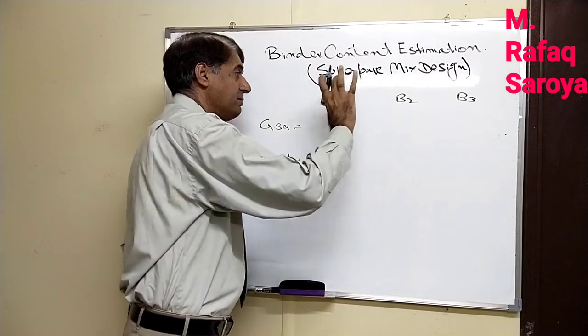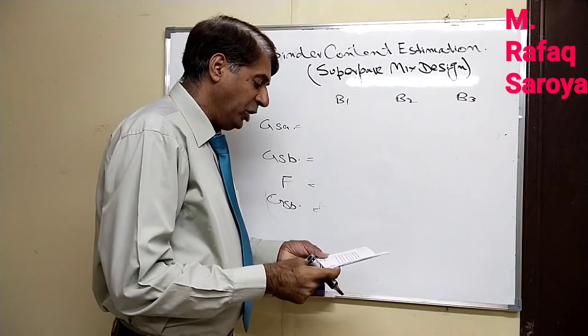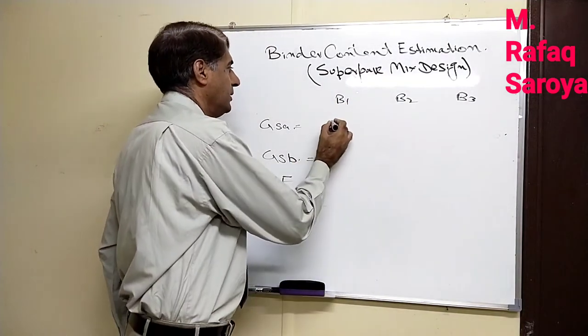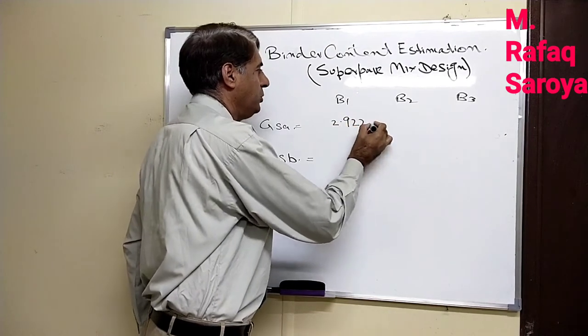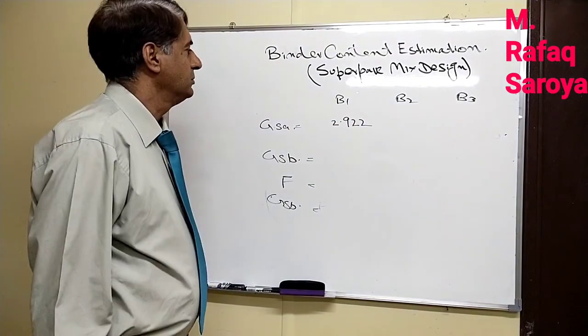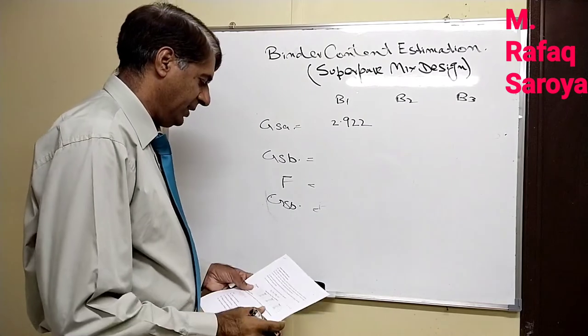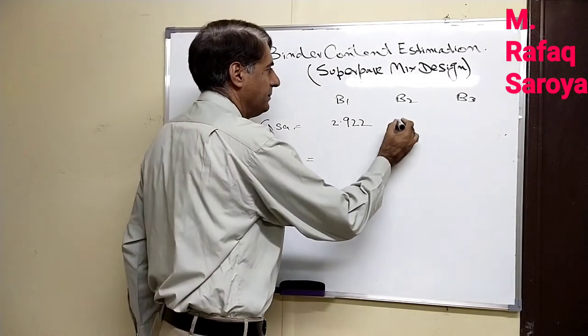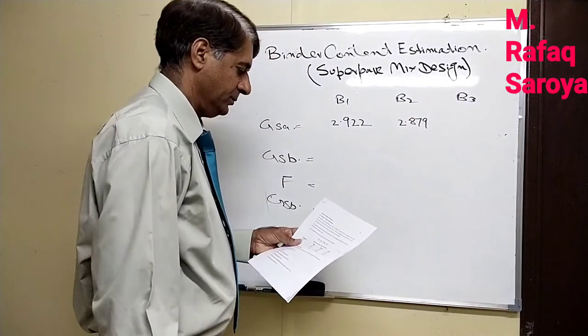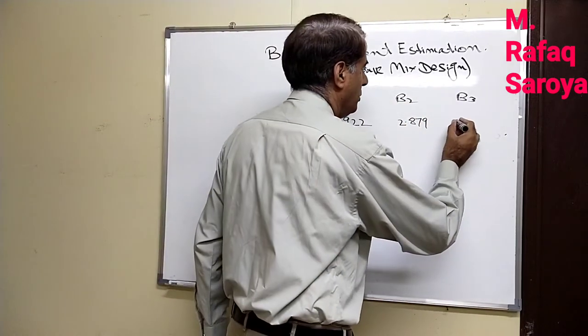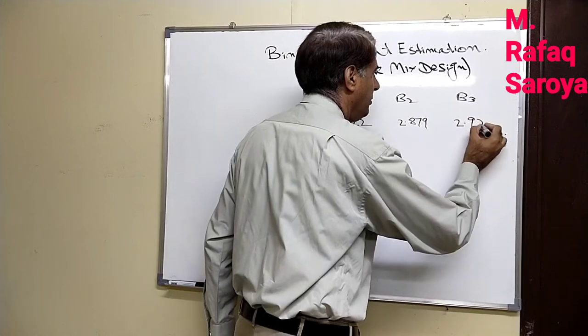So first, our blend, the value was given: apparent specific gravity 2.922, 2.897, and 2.921. These are the values of apparent specific gravity.